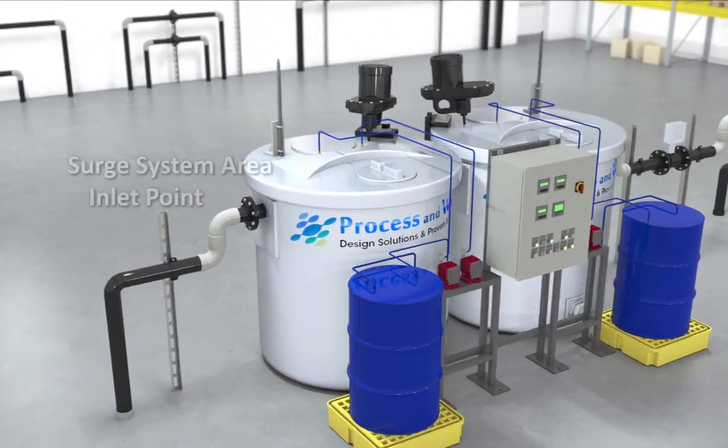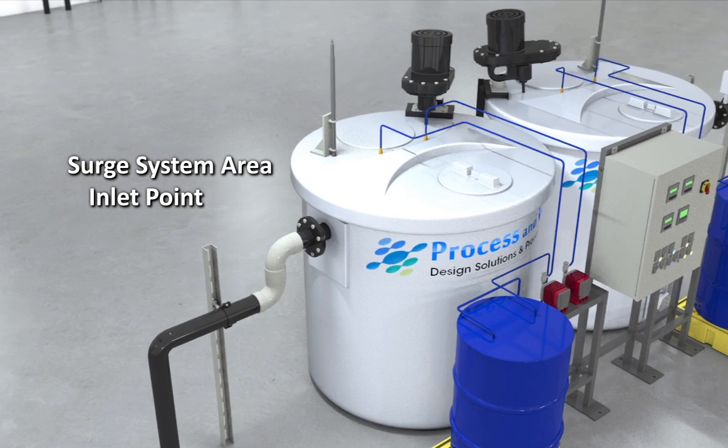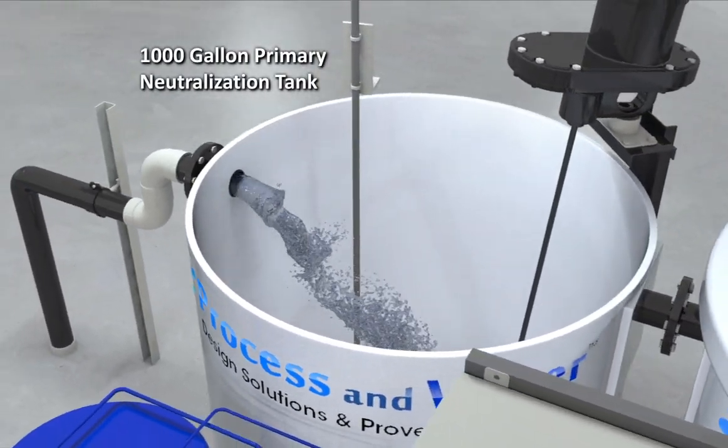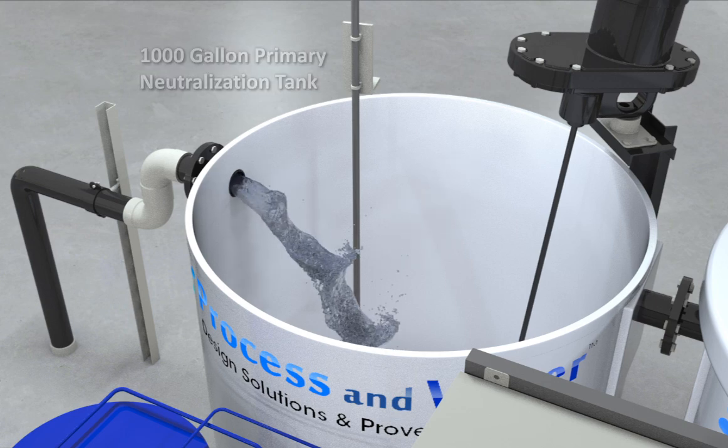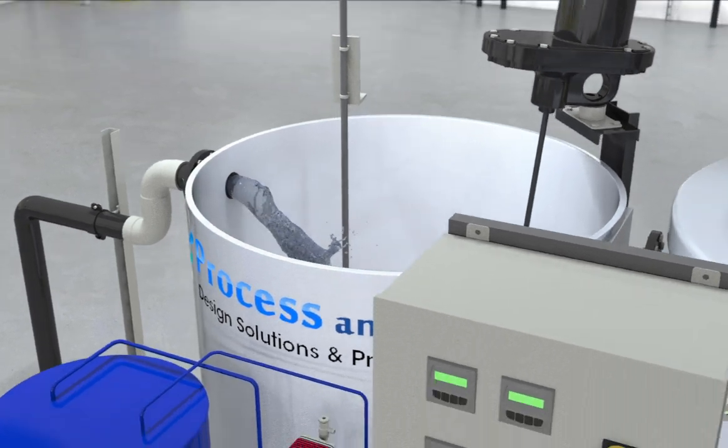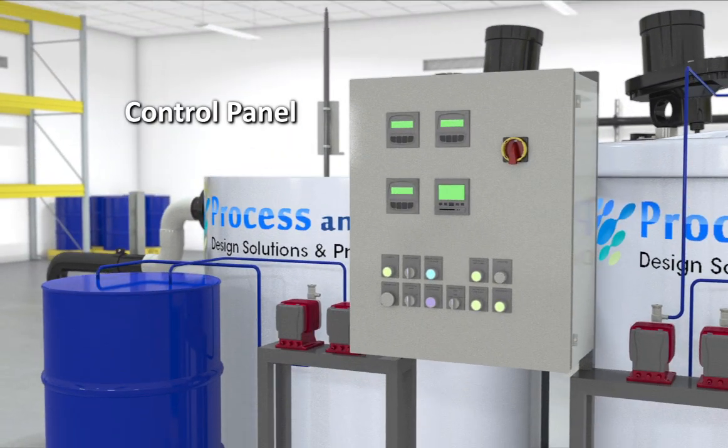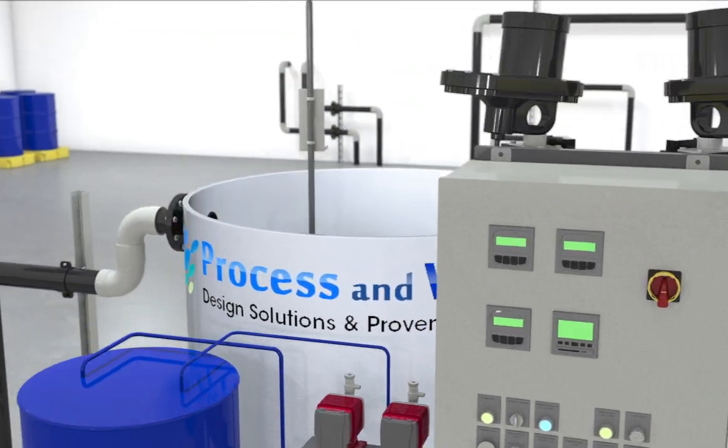The solution that is transferred from the surge system area is collected within the primary pH neutralization tank. Using the control panel, an operator may begin the mixing process, agitating the water.